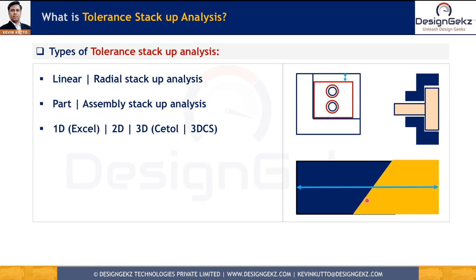In 2D stack-up, angular faces and their variations also contribute to the overall result. In this example, both mating parts meet on an angular surface, so variation of that angular mating surface also contributes to determining the overall length of the two parts together. This is an example of 2D stack-up. We can solve this by converting the 2D dimension into 1D with the help of trigonometry, or we can use software like CTOL or 3DCS.